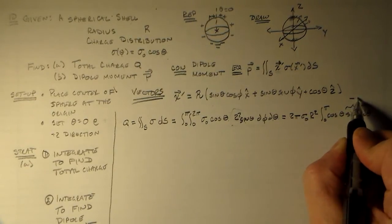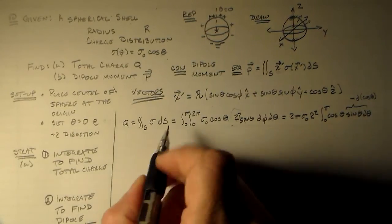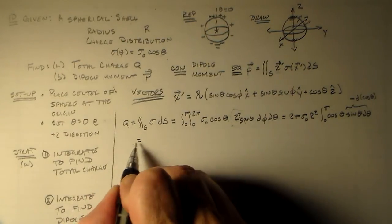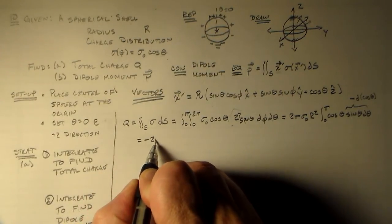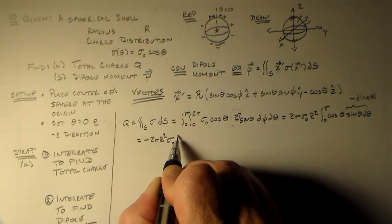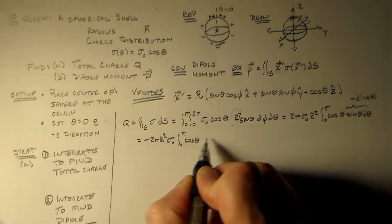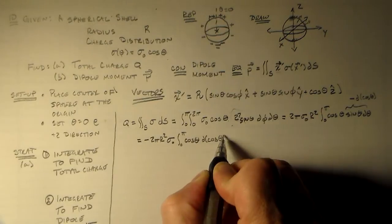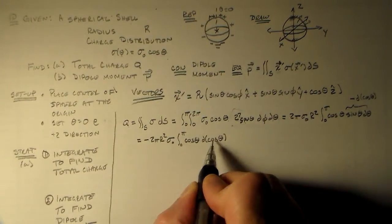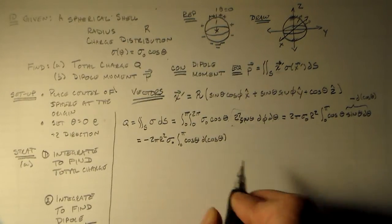But if we look at this, we know that this is minus d cosine theta. So we could actually just do a really simple integral with that. So if we make that substitution, we get minus 2 pi. We'll switch this to R squared sigma naught. 0 to pi, cosine theta, d cosine theta. If we do this, this is just like x dx, only with cosine thetas in it. So that's going to be 1 half cosine squared theta. So that means we end up with minus pi R squared sigma naught times cosine squared theta.